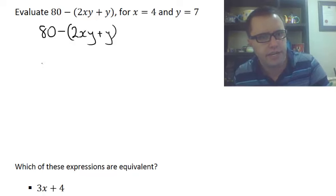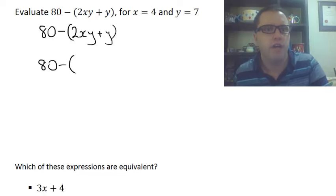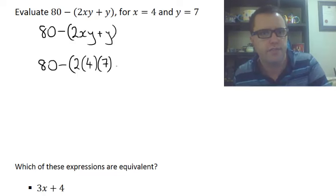Because it's a lot easier to keep track of what is supposed to be there. What you're supposed to have replaced and things. So 80. Well 80 doesn't change. So 80 is going to stay there. 80 minus. Keep our brackets for now. 2. Here's our x. So x gets replaced with 4. Y gets replaced with 7. Plus y is 7.